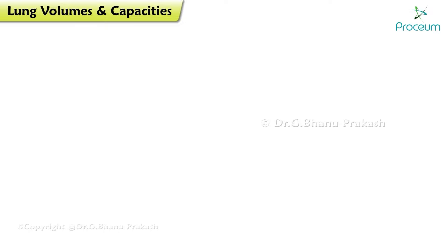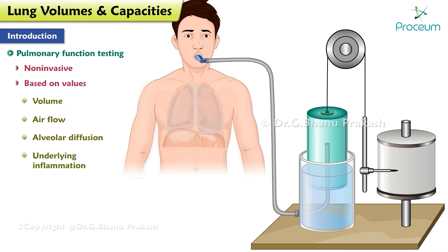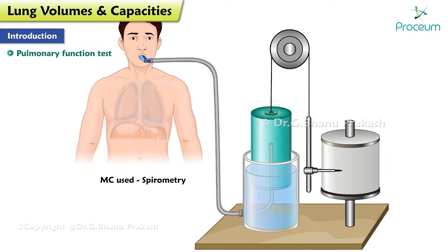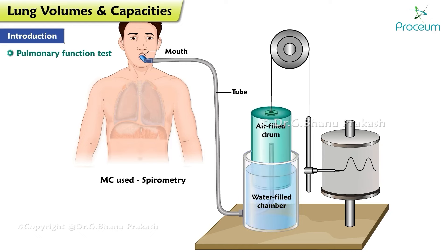Lung volumes and capacities: introduction. Pulmonary function testing (PFT) is a non-invasive way to help determine overall lung health based on values for volumes, air flow, alveolar diffusion, and underlying inflammation. The most commonly used pulmonary function test is spirometry. A spirometer consists of an air-filled drum floating in a water-filled chamber. As the person breathes air in and out of the drum through a tube connecting the mouth to the air chamber, the drum rises and falls in the water chamber. This rise and fall can be recorded as a spirogram, which is calibrated to volume changes.